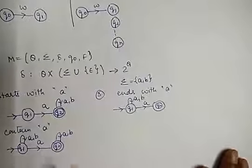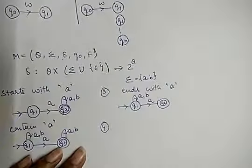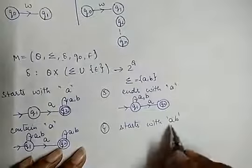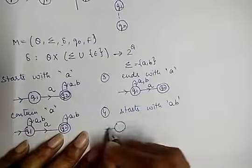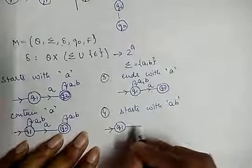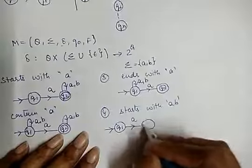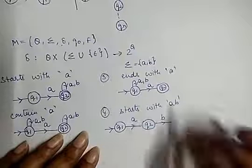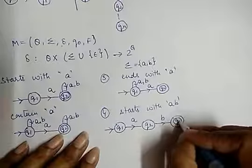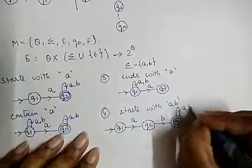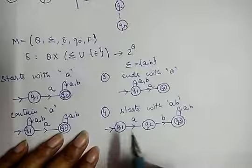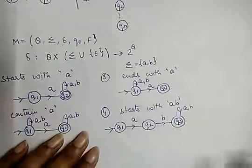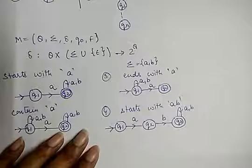Fourth example: I have to create an NFA for all strings which start with AB consecutively. If Q1 is the initial state, the first input is A and it moves to Q2. Then B comes and it moves to the final state Q3. I don't care whether A or B comes at the end — the main part is that it always starts with AB consecutively.